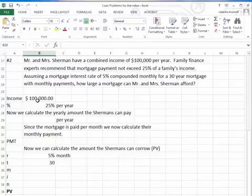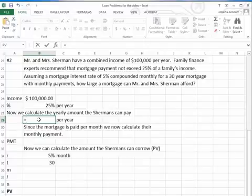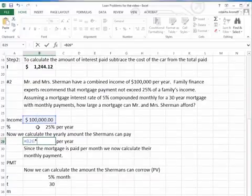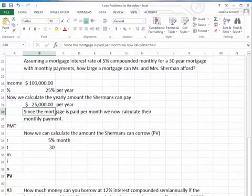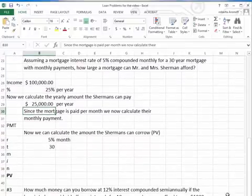Well, since they have a combined income of $100,000 and the financial experts said the payments cannot exceed 25% per year, the first thing we're going to calculate is what is the maximum that they could pay per year. In order to do that, we take the $100,000 that they earn times the 25%, according to the financial experts, and therefore that tells us that they could pay at a maximum of $25,000 per year.